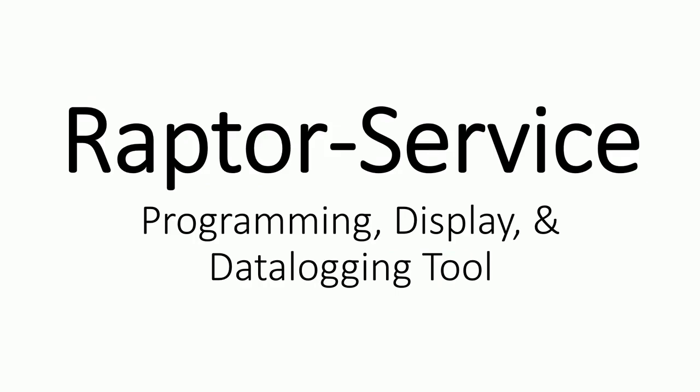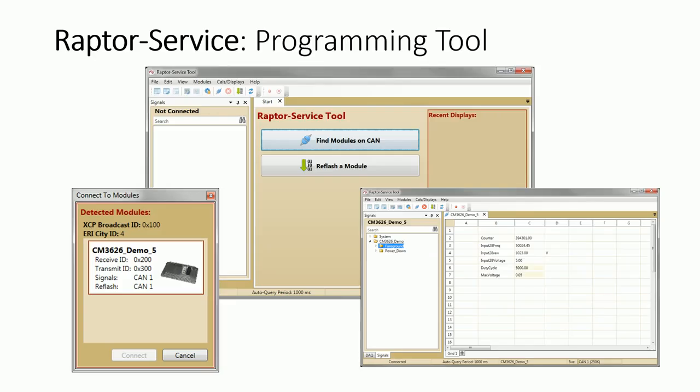Raptor Service is another option for monitoring data or troubleshooting issues with hardware in the field. Raptor Service is essentially the same software as Raptor Cal, but without the calibration capabilities. It's primarily intended to be used by technicians for flashing software updates or troubleshooting issues using custom displays and data logging.